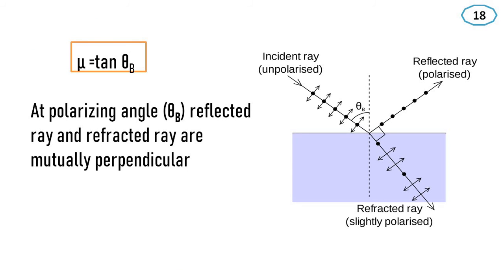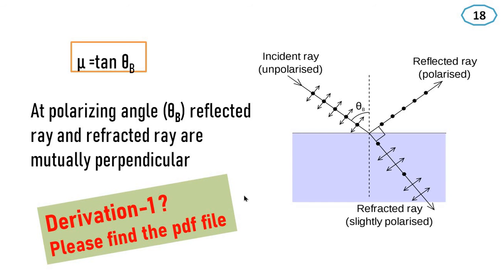At the polarizing angle theta b, the reflected ray and refracted ray are mutually perpendicular. To prove that mu equals tan theta b, we need to do a derivation. The derivation is attached separately and we will discuss it.